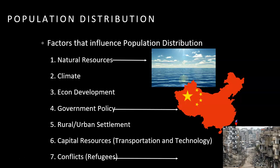Rural versus urban settlement: people tend to live closer to cities, closer in to urban areas. There are a lot of different reasons for that — you have more services, things like hospitals and doctors, police and fire departments. There are more jobs and more avenues of education, so you tend to have a heavier population in urban areas as opposed to rural areas.